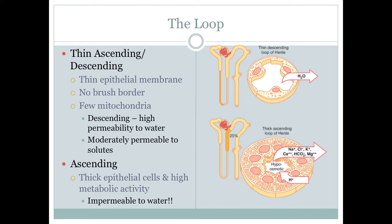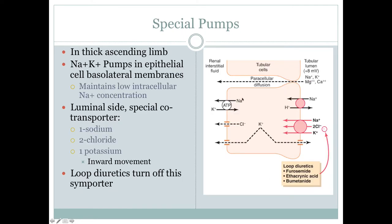The ascending limb has nice thick cells with high metabolic activity, and water can't get in. Solutes are traded in this area mainly actively. In the thick ascending limb, we have typical sodium-potassium pumps to maintain sodium low inside cells and potassium high inside — that's normal, it has a resting potential. There's also an antiporter here, as in the proximal convoluted tubule, trading sodium in for hydrogen out, and then that sodium is trafficked out in exchange for potassium.